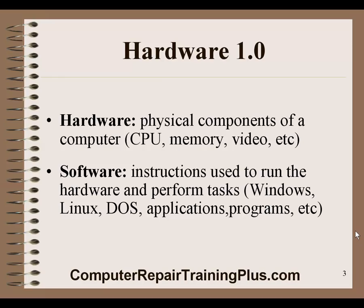Hardware is anything physical — anything that you can touch or handle. These are physical components of the computer: CPU, memory, video card, mouse, keyboard. Software are instructions, and these are instructions used to run the hardware so it can perform tasks, such as data processing. Windows, Linux, DOS, applications, programs — any files that we run on the computer are the software instructions that allow the computer to perform tasks.